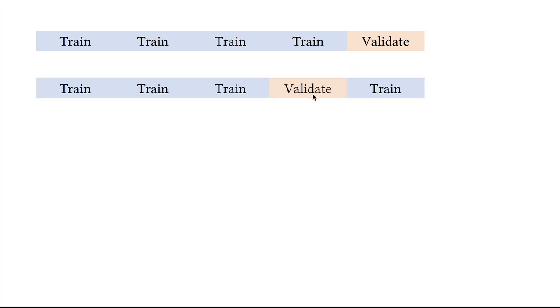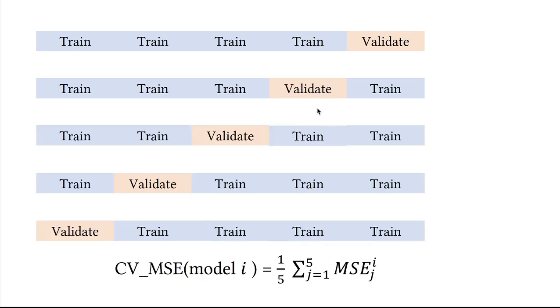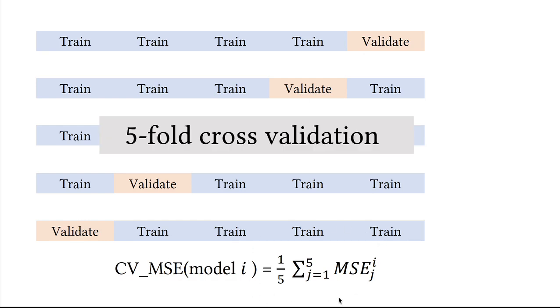Then we move and we take another fold of the data as a validation set, we train the model on the other four and validate on this part, and so on. Then in this case cross-validation mean squared errors for model i would be the mean squared errors out of sample in the validation sets across all of the five validation sets. This is an example of five-fold cross-validation.